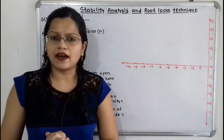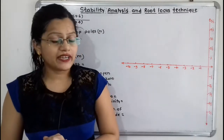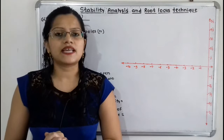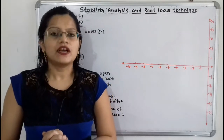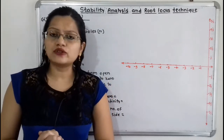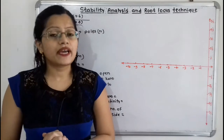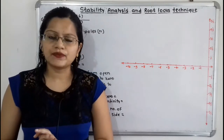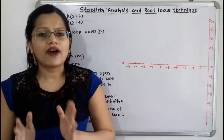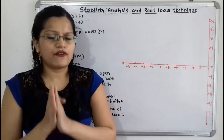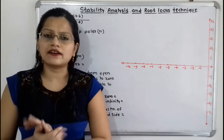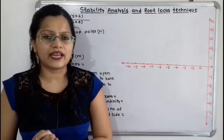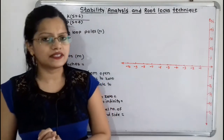Hello friends, this is Priyanka. Today we are going to solve a problem on stability analysis and root locus technique. In this video we are going to sketch the root locus, find out the breakaway and break-in points, find out the range of K for which the system is underdamped, and find out the value of K for critical damping.